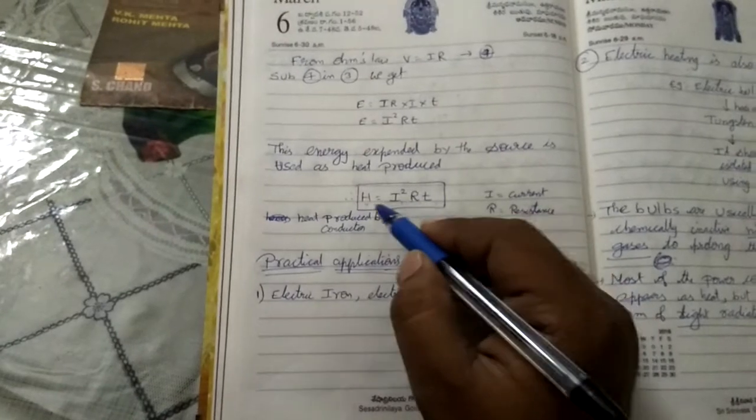Joule's law of heating is stated as heat produced by the conductor is directly proportional to square of the current, directly proportional to resistance, directly proportional to time. So we see some practical applications where this heating effect is used.